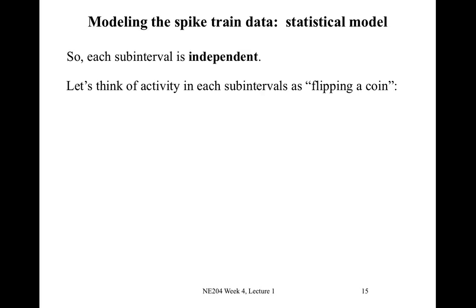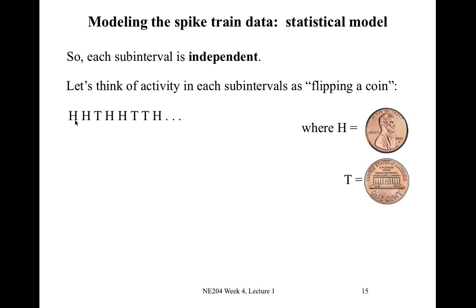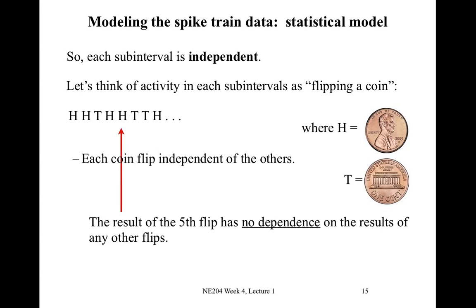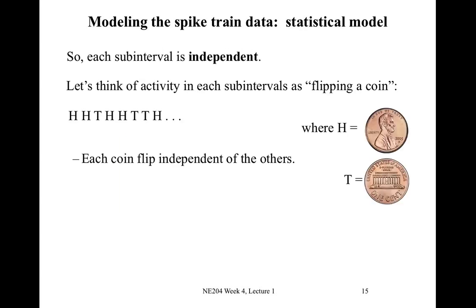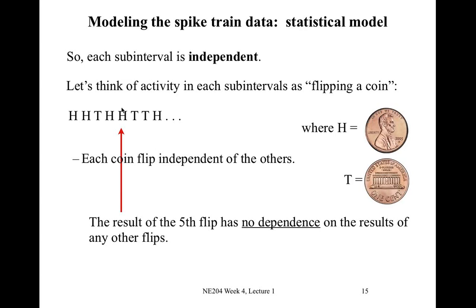We can think of this independence as flipping a coin in each sub-interval. When we flip a coin we observe either heads or tails. Each coin flip is independent of the others. If we imagine flipping a coin eight times, the result of the fifth coin flip — indicated by the arrow — has no dependence on any of the other coin flips, whether the fourth, third, or sixth.